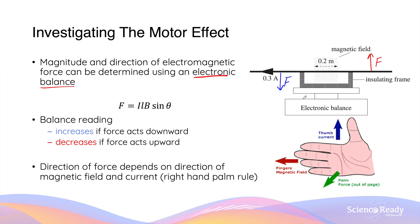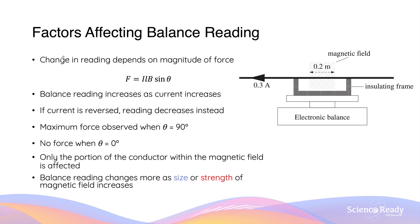So in simpler words, by using the electronic balance, not only can we determine the direction of the force due to the motor effect, we can also use the change in mass reading to calculate the magnitude of the produced force. The extent to which the reading on the balance changes depends on the magnitude of the force. We can analyse the relationship between force and the other variables by using the motor effect equation.